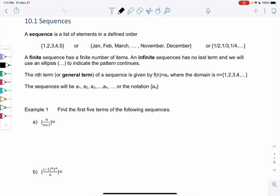Section 10.1, sequences. A sequence is a list of elements in a defined order. So I have some examples: 1, 2, 3, 4, 5 is a sequence.